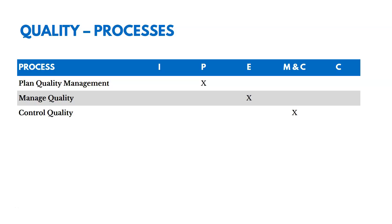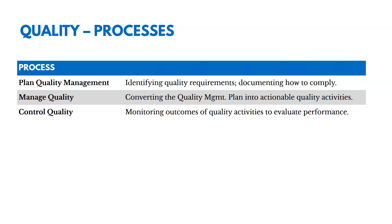There are only three processes in this chapter. One's in planning, one in executing, one in monitoring and controlling. In Plan Quality Management, we're identifying quality requirements and documenting how to comply with them. In Manage Quality, which is in executing, we're converting the quality management plan into actionable quality activities. And then in Control Quality, we're monitoring the outcomes of quality activities to evaluate our performance.